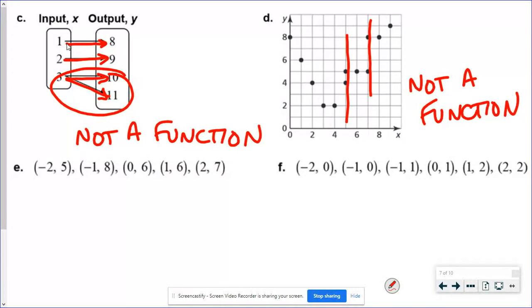In letter e, I want you to look at the X's. If the X's don't repeat, it's a function. So I've got a negative 2, a negative 1, 0, 1, 2. No repeating, that's a function.